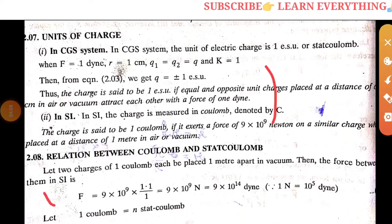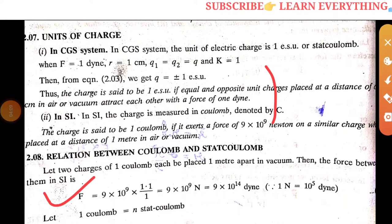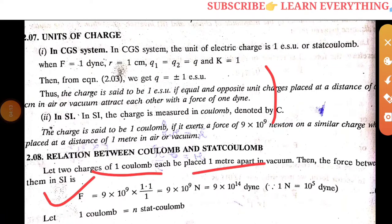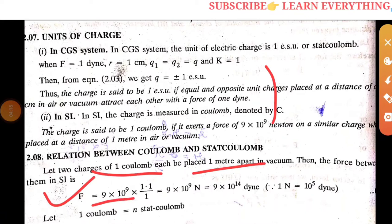Relation between coulomb and stat coulomb. We have two definitions. With 1 coulomb at 1 meter distance, we have force 9 times 10 to the 9 newtons.